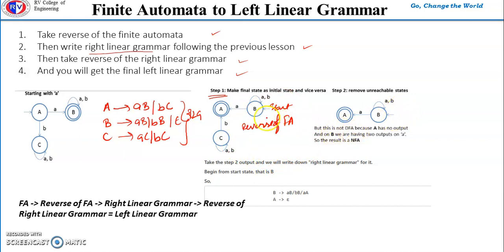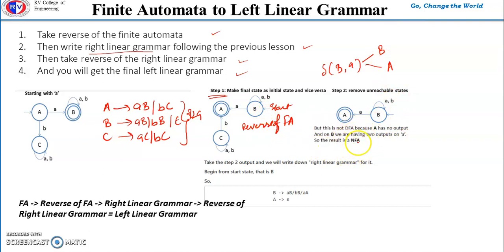One more thing: this reversed automata is not a DFA. From state B, for input A, there are two paths — it can go to B or to A. Since from state B on input A we go to more than one state, this is an NFA. Also, state C has been removed because it is not reachable from the new start state B — there is no way to reach C from B, so it is a non-reachable state and must be removed. After removing it, this is the reverse of the original finite automata.